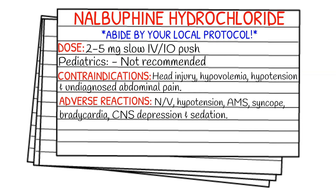As always, before we get into dosages, make sure that you're abiding by your local protocol and staying within your scope of practice. The dose for Nubain is going to be 2-5 mg, slow IV or IO push, and it is not recommended for pediatrics.